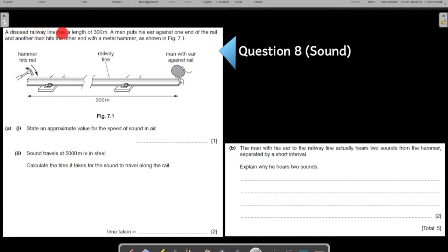Question number eight: A disused railway line has a length of 300 meters. One man puts his ear against one end of the rail and another man hits the other end with a metal hammer. The distance between them is 300 meters. State an approximate value of the speed of sound in air. This is something I explained again and again - you need to remember this number. You can give your answer as 300 to 350 meters per second.